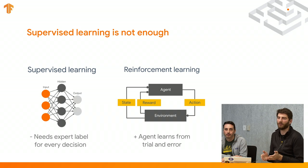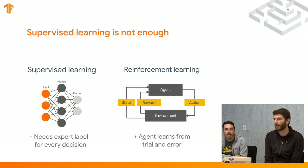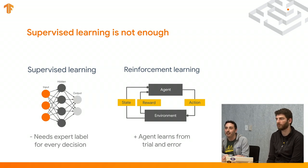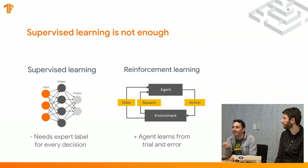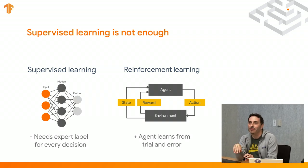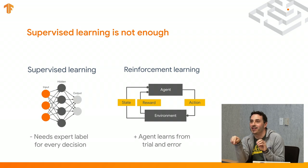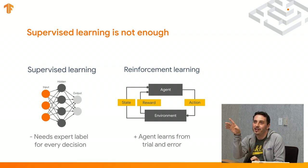The credit assignment problem is: there's a set of actions where we might even get negative reward, but we need to figure out that those actions led to positive reward down the line. The objective is to maximize a discounted return — a sum of rewards over a length of time steps. In RL, we care about long-term value, not only immediate reward.